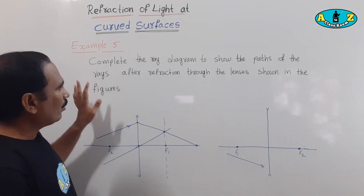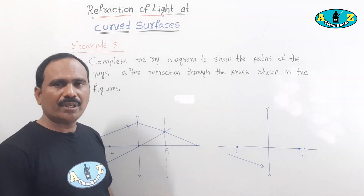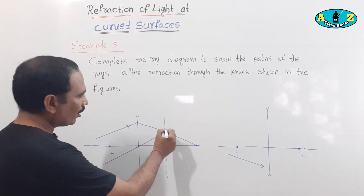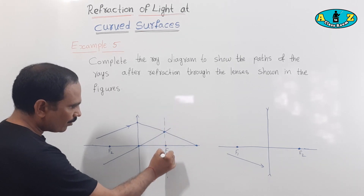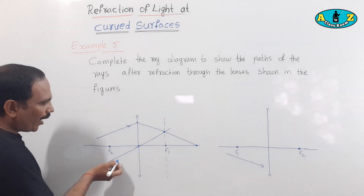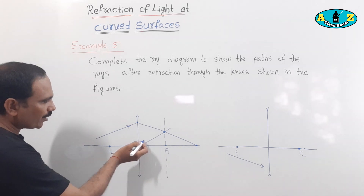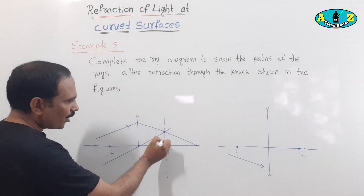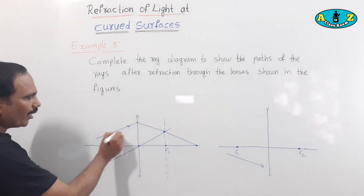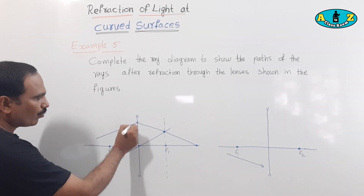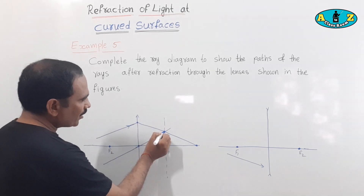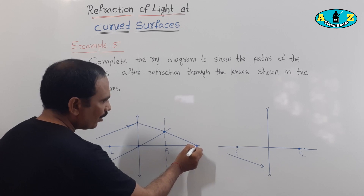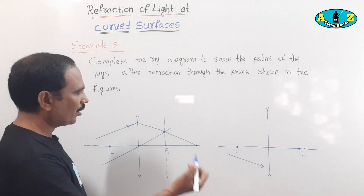In Example 5, there are two incomplete ray diagrams to fill in. Here is the first incomplete ray diagram for the convex lens. Draw the perpendicular line to the focal point. This focal point intersects the perpendicular line at the intersecting point. Extend this ray diagram with the convex lens — the refracted ray passes through the intersecting point.